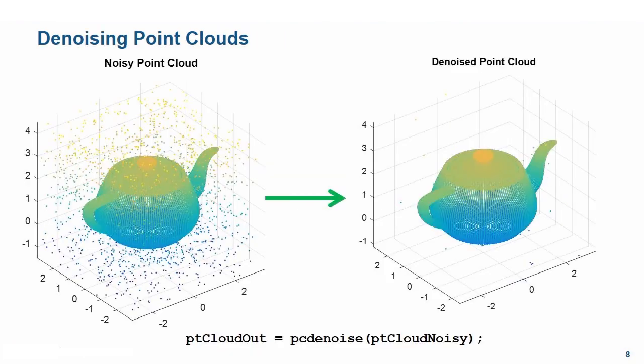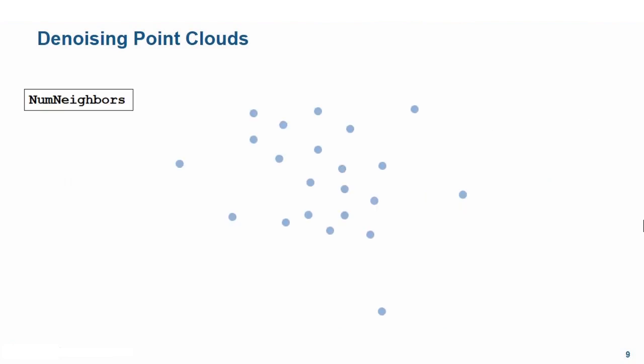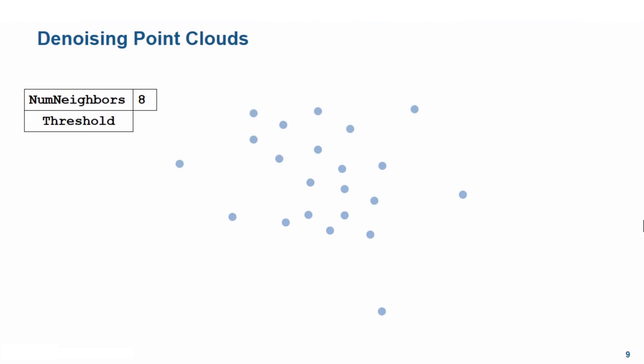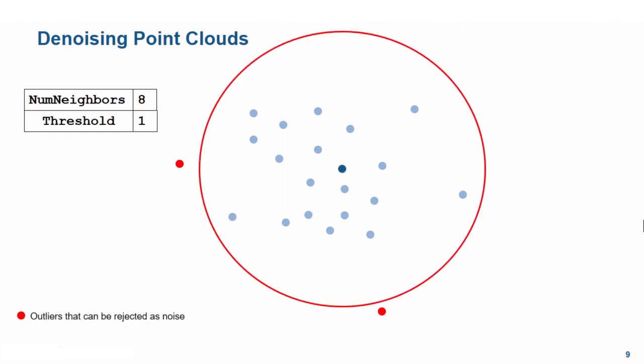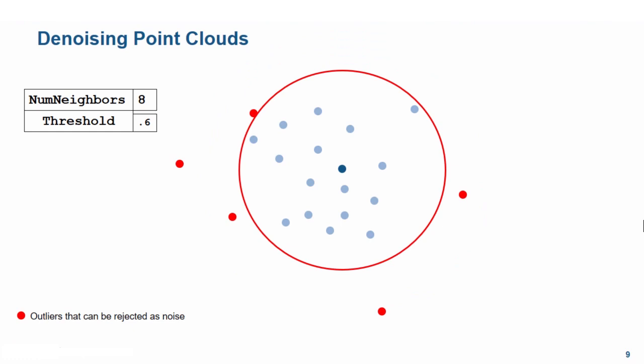Another kind of preprocessing commonly utilized is denoising point clouds, done using the pcdenoise function. It has a numNeighbors property where you can specify the number of neighbors used to estimate the mean of the average distance to neighbors of all points. We can increase this number to improve robustness of the noise filter, but this increases the number of computations. There is another property called the threshold — a point is considered to be an outlier if the average distance to its k nearest neighbors is above the specified threshold. We can tighten this threshold to remove noise.